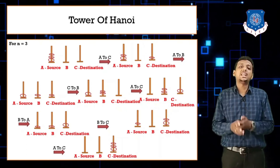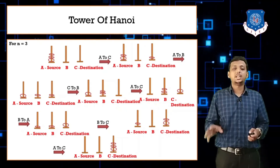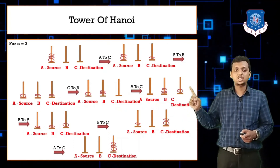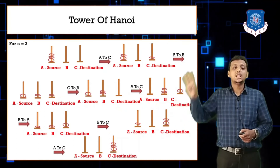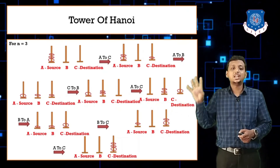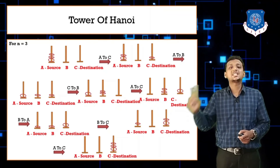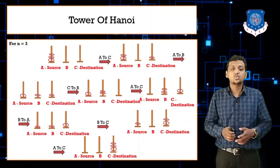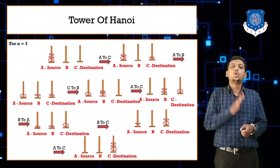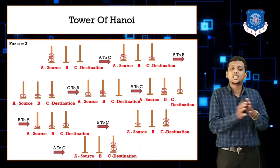The algorithm completes in seven steps when n equals three: first A to C, second A to B, third C to B, fourth A to C, fifth B to A, sixth B to C, and seventh A to C. In seven steps, the Tower of Hanoi problem is fully solved for n equals three.